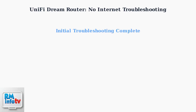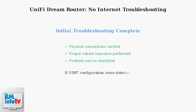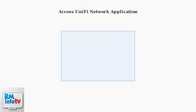These initial troubleshooting steps help identify the most common causes of no internet connection with the Unify Dream Router. If the direct connection test shows the UDR7 has a configuration issue, you'll need to proceed with advanced troubleshooting steps. When basic troubleshooting fails, access your UDR7 through the Unify Network application to perform advanced configuration fixes.